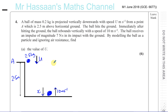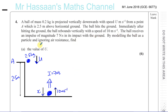The ball receives an impulse of magnitude 7 newton seconds in its impact with the ground. So there's going to be an impulse which the ball receives from the ground, and that impulse has to act upwards, because the ball has changed direction. Its magnitude is 7 newton seconds. By modeling the ball as a particle and ignoring air resistance, find first the value of u.